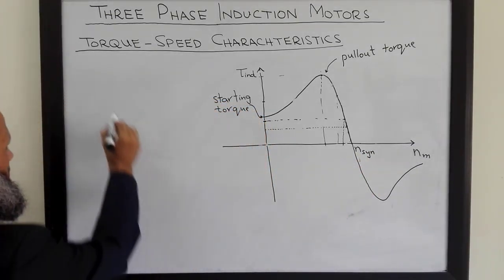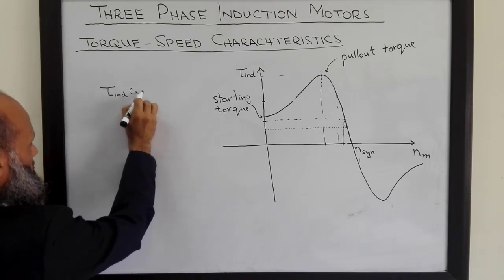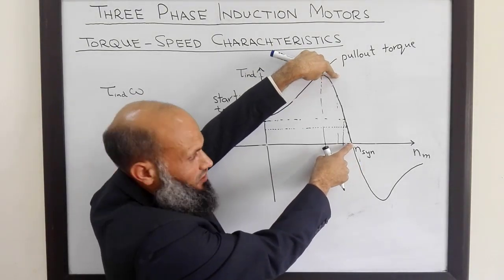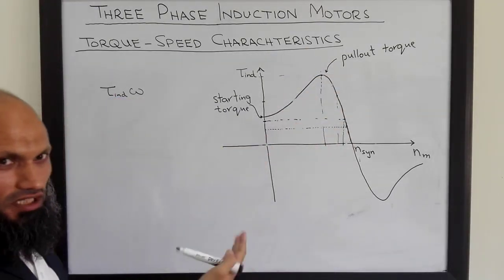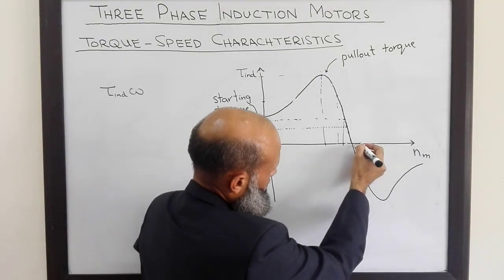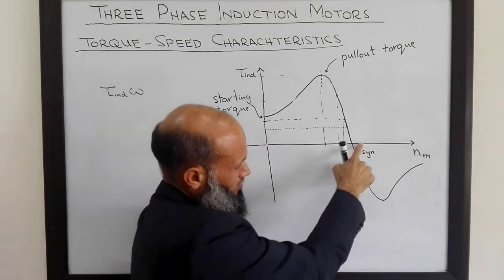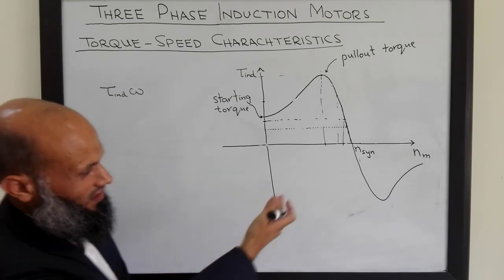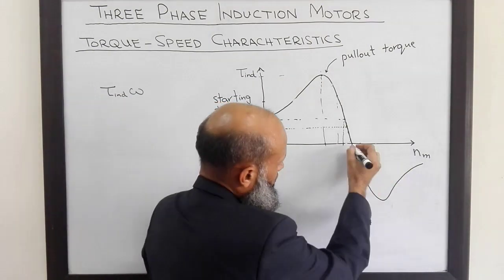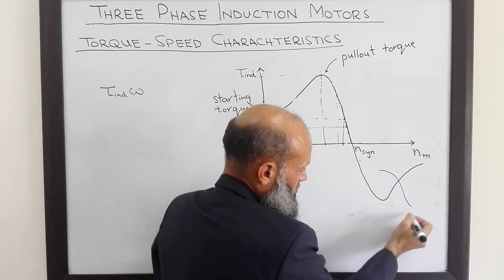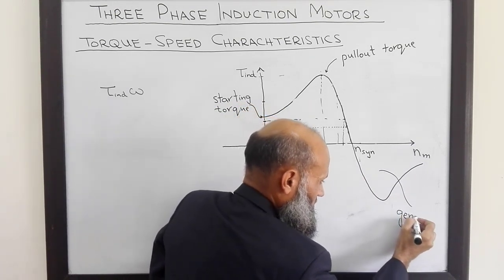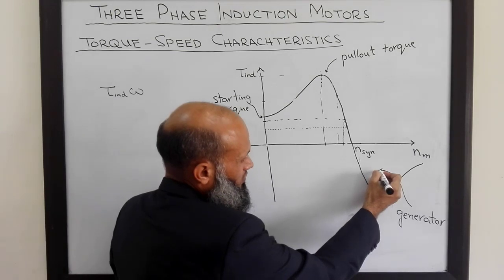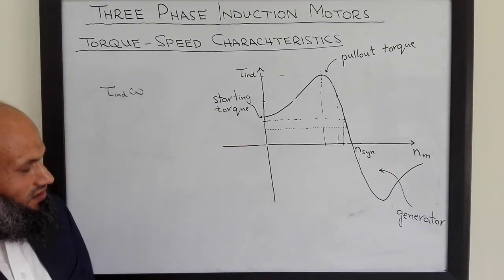What does that mean? We know that power is equal to torque multiplied by speed. In the normal motoring region, torque multiplied by speed was positive — the motor was consuming power and behaving as a load. However, beyond synchronous speed, induced torque is negative. So torque multiplied by speed is also negative. A negative power consumed by the motor means it is behaving as a generator. This is the region where the machine generates power, and it is called an induction generator. Although induction generators are very rarely used, this machine can work as an induction generator.